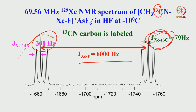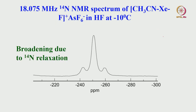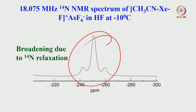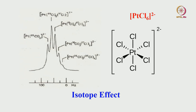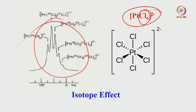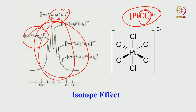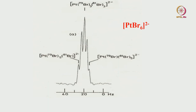The resulting pattern is: 6000 Hz xenon-fluorine coupling, 300 Hz nitrogen-14 coupling giving a triplet, and 700 Hz carbon-13 coupling giving a doublet of each triplet line. The nitrogen-14 NMR of this molecule is very broad due to nitrogen-14 quadrupolar relaxation. Similarly in platinum NMR: platinum-chlorine complexes show multiple isotopomer peaks, since chlorine has Cl-35 and Cl-37 isotopes — varieties of isotopomers present, each giving a peak with intensity calculable from isotope distribution, as also applies for bromine.